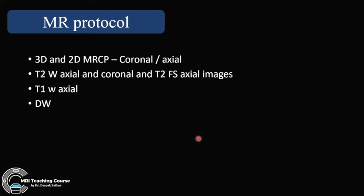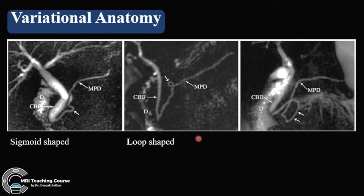At our institute we do axial 3D MRCP instead of coronal, which gives better depiction of the pancreatic biliary anatomy, along with routine T2 axial and coronal T2 fat sat. For ductal anomaly or ductal variation assessment, we give gadolinium — around 1 ml in 100 ml of water — which acts as a negative contrast. Pineapple juice also works because it contains manganese and suppresses the T2 signal, so the duodenum and background are suppressed, giving a better picture.